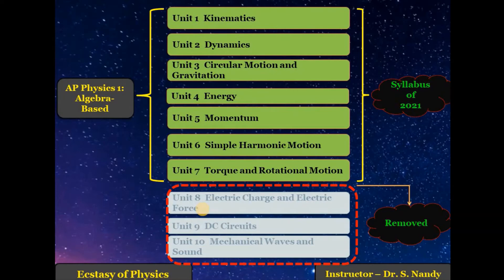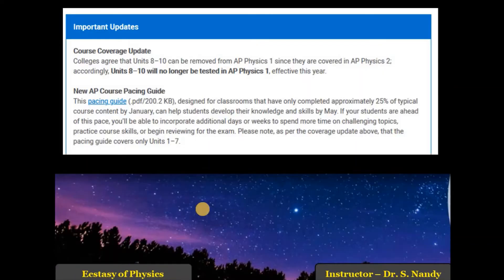The syllabus of 2021 will contain only 7 different units: Unit 1 Kinematics, Unit 2 Dynamics, Unit 3 Circular Motion and Gravitation, Unit 4 Energy, Unit 5 Momentum, Unit 6 Simple Harmonic Motion, and Unit 7 Torque and Rotational Motion.